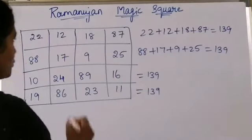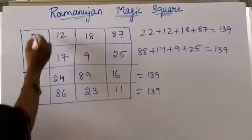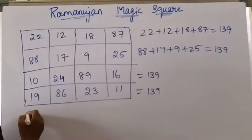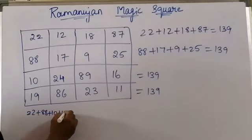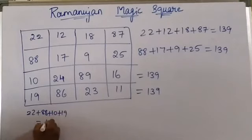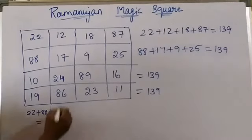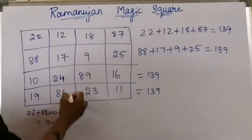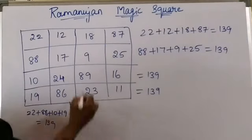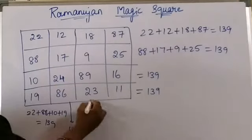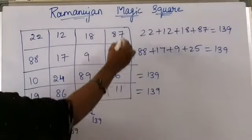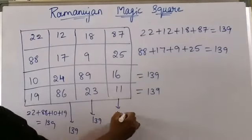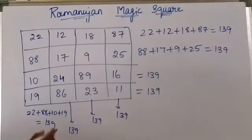Coming to columns: when you add the first column — 22 plus 88 plus 10 plus 19 — you will get 139. When you add all numbers in the second column, you will get 139. Third column: 139. And the fourth column: 139.